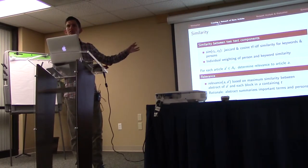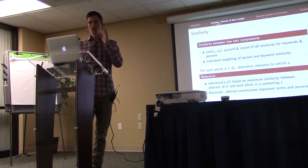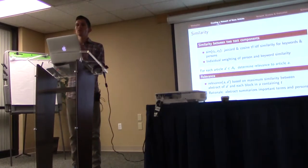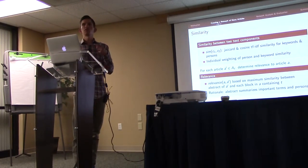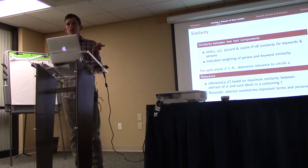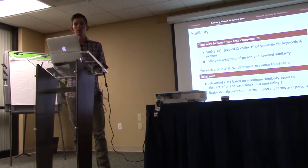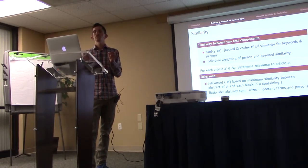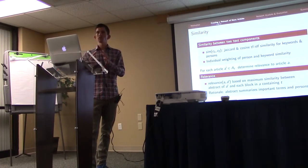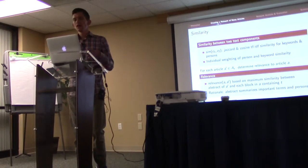To define the similarity between two arbitrary text components, we use Jaccard and cosine similarity for keywords and persons. To represent keywords and persons in vector space, we use TF-IDF weights — standard metrics from information retrieval. It's important to note that person and keyword similarity can be weighted individually, so the user will be able to decide whether to put more emphasis on linking by keywords or persons. It turns out that the results are quite different and put different focus on the aspects you're linking articles by.